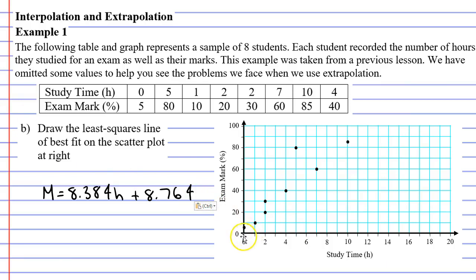And we'll take our two points from study times of zero hours and 10 hours because we want two points that are quite far apart. So I've just drawn up a small table of values using the 0 and the 10.